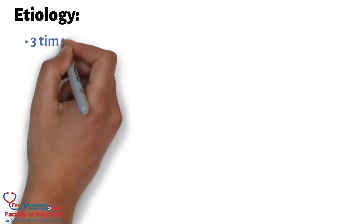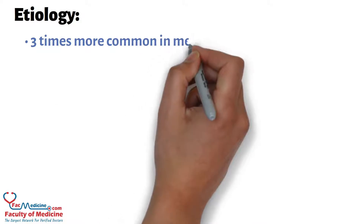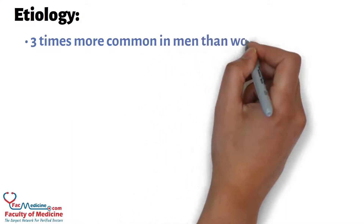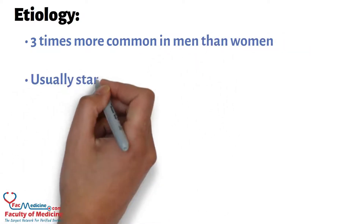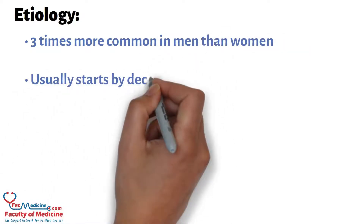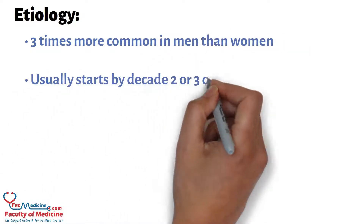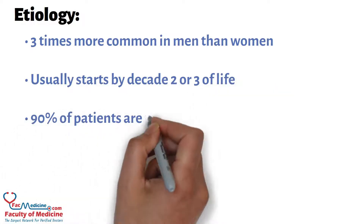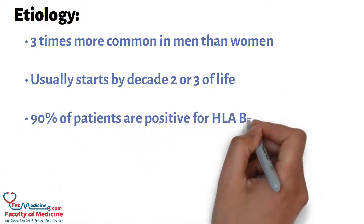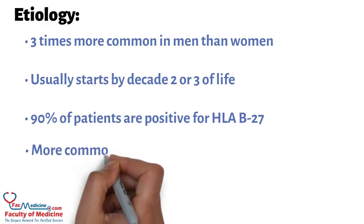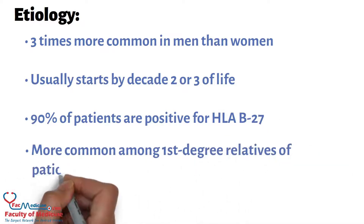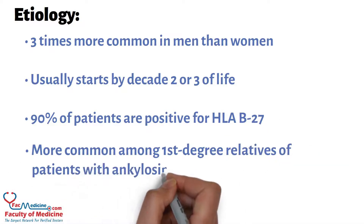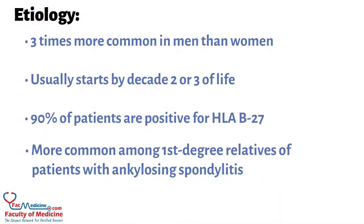Aetiology: Ankylosing spondylitis is three times more common in men than women. It usually starts in the second or third decade of life. 90% of patients are positive for HLA-B27, and it is more common among first-degree relatives of patients with ankylosing spondylitis.